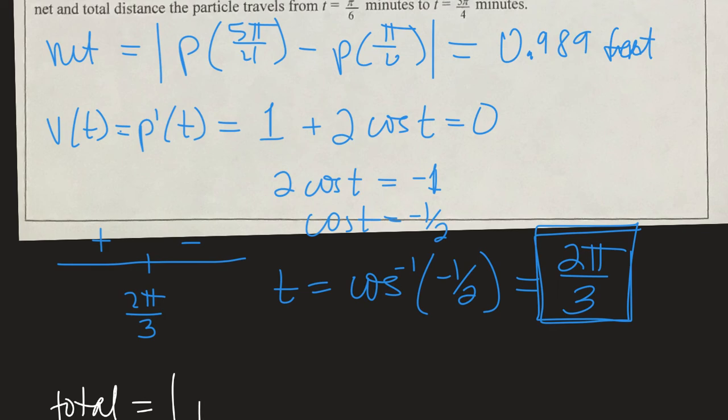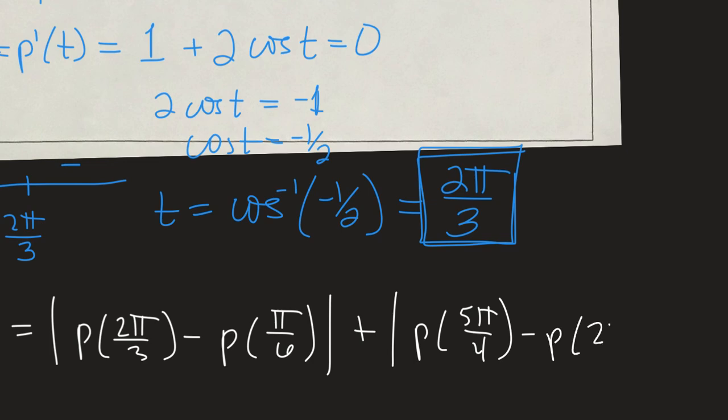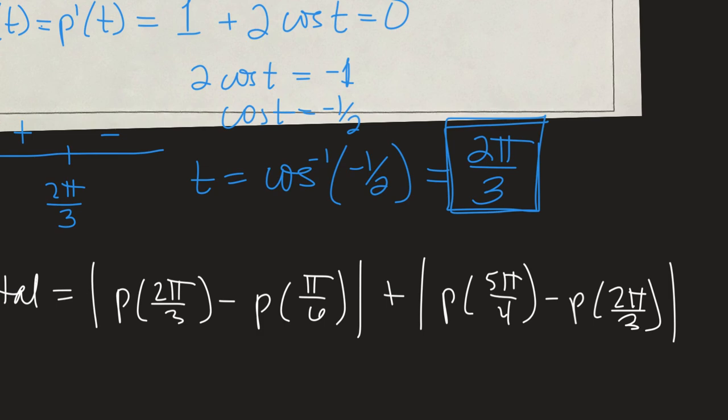minus our original π/6, plus the endpoint at 5π/4 minus our 2π/3.